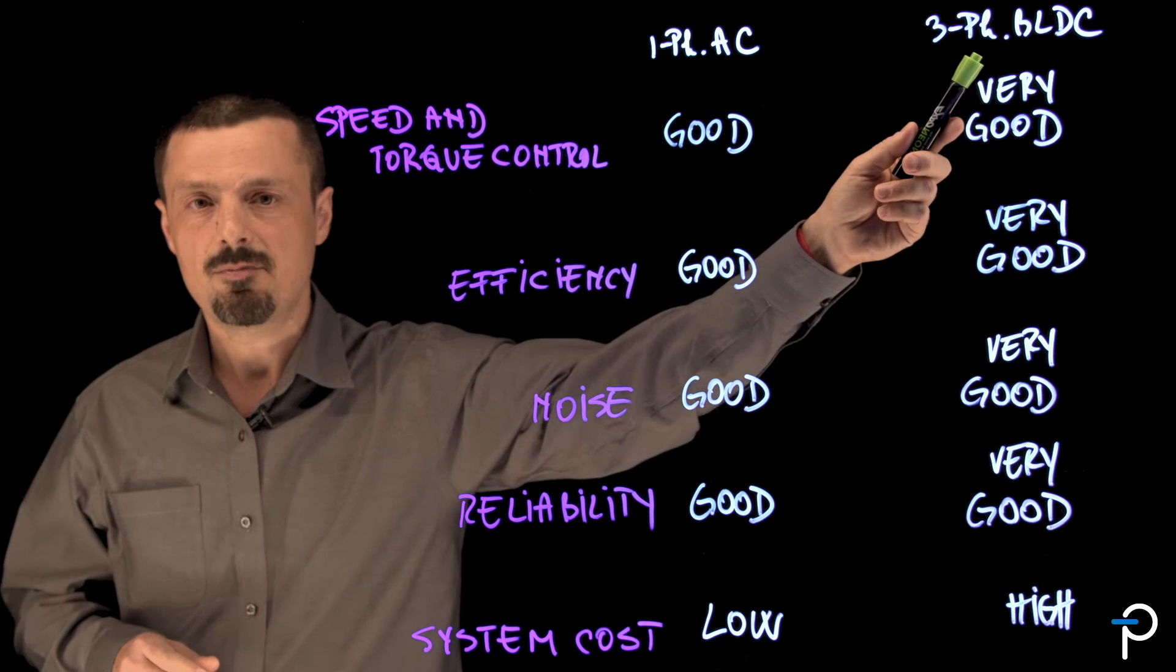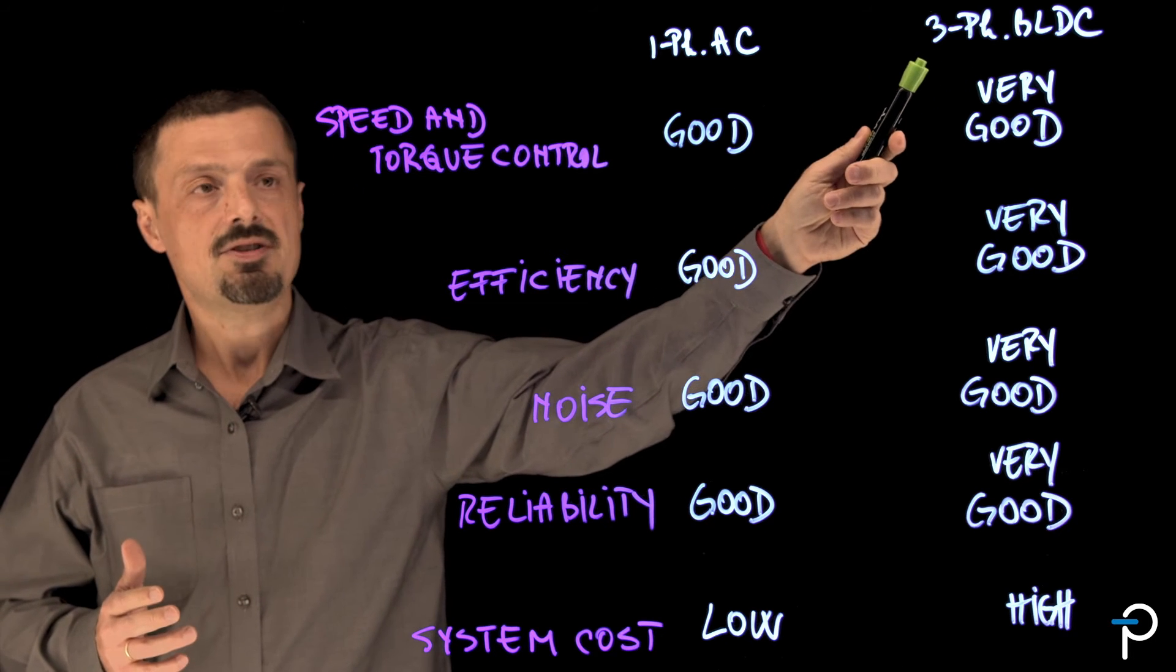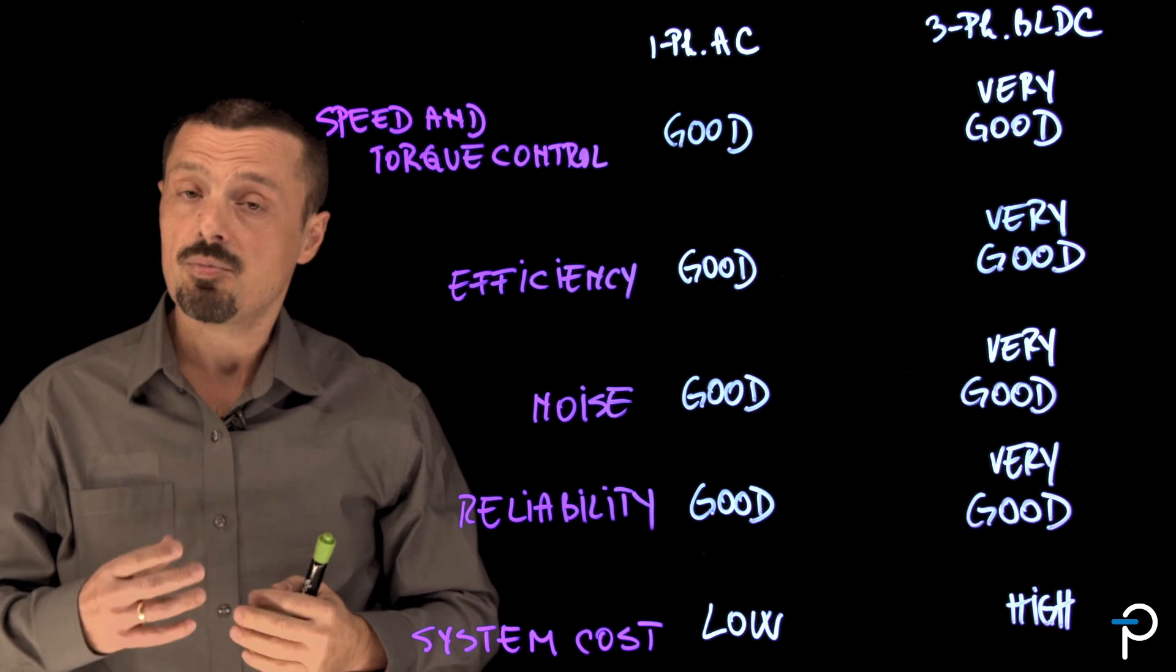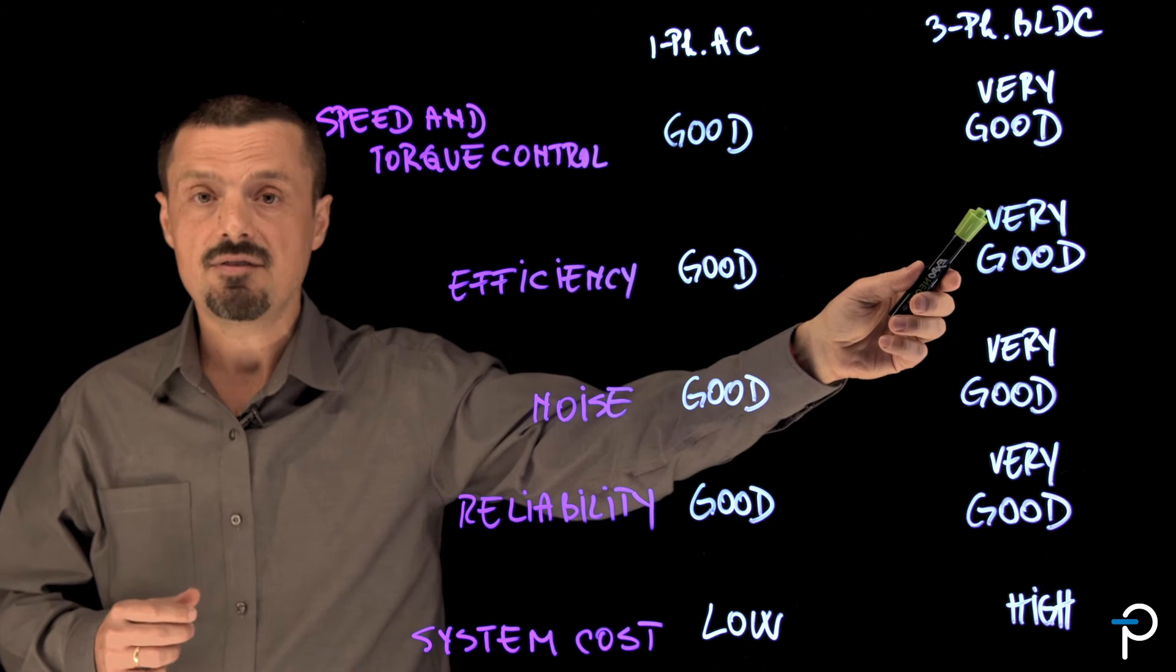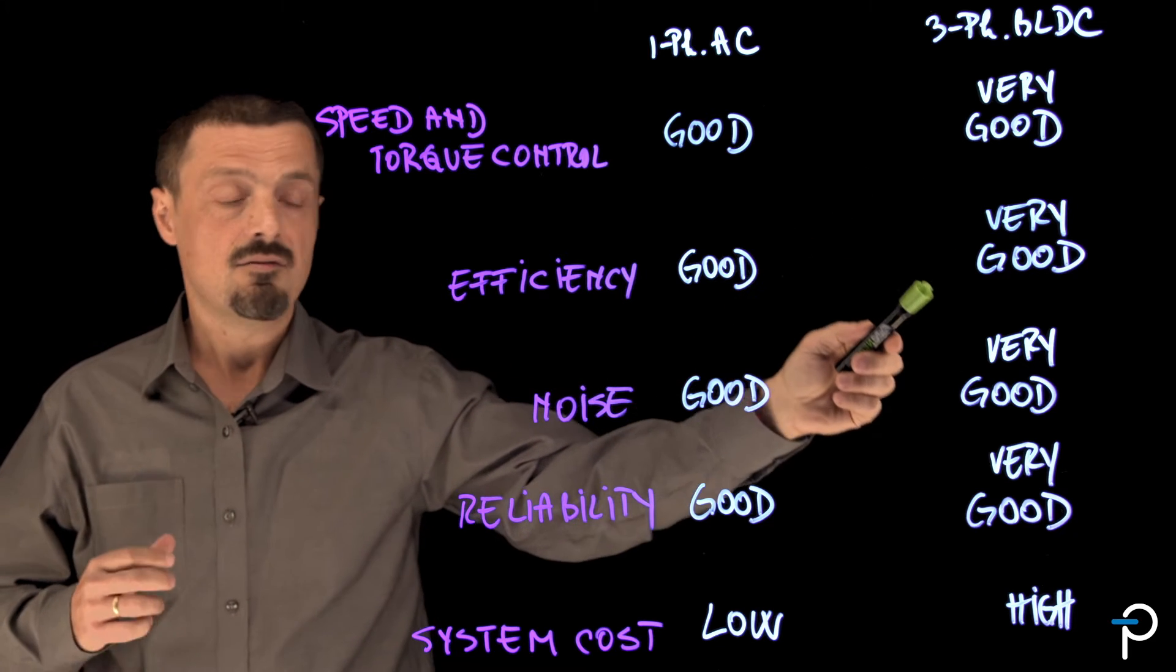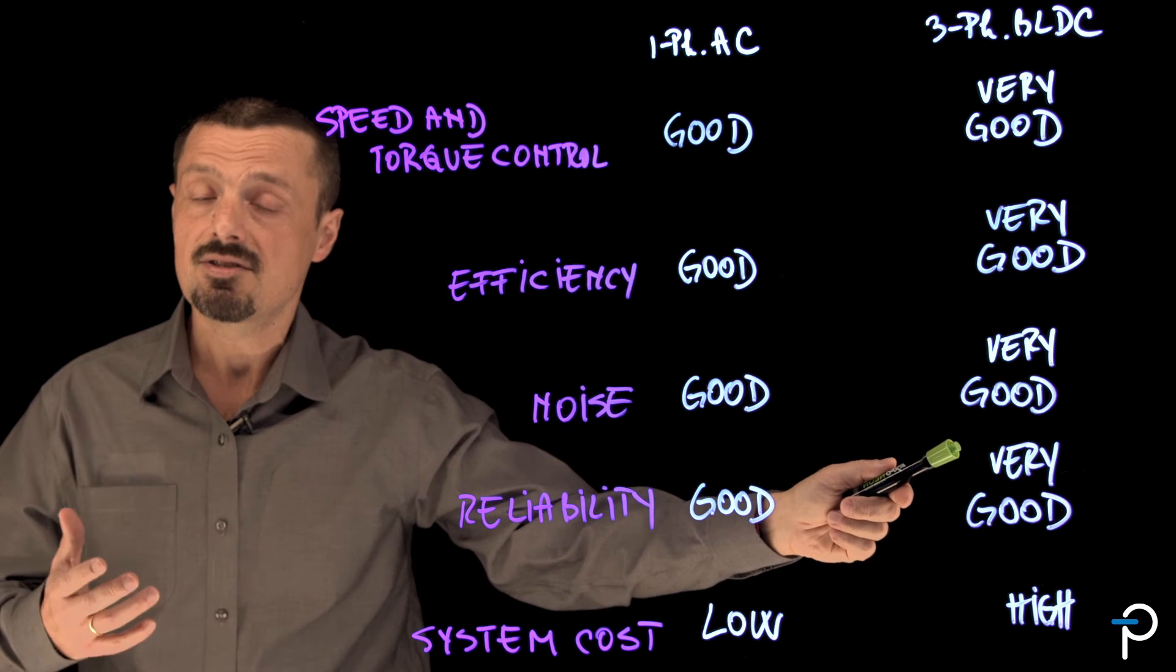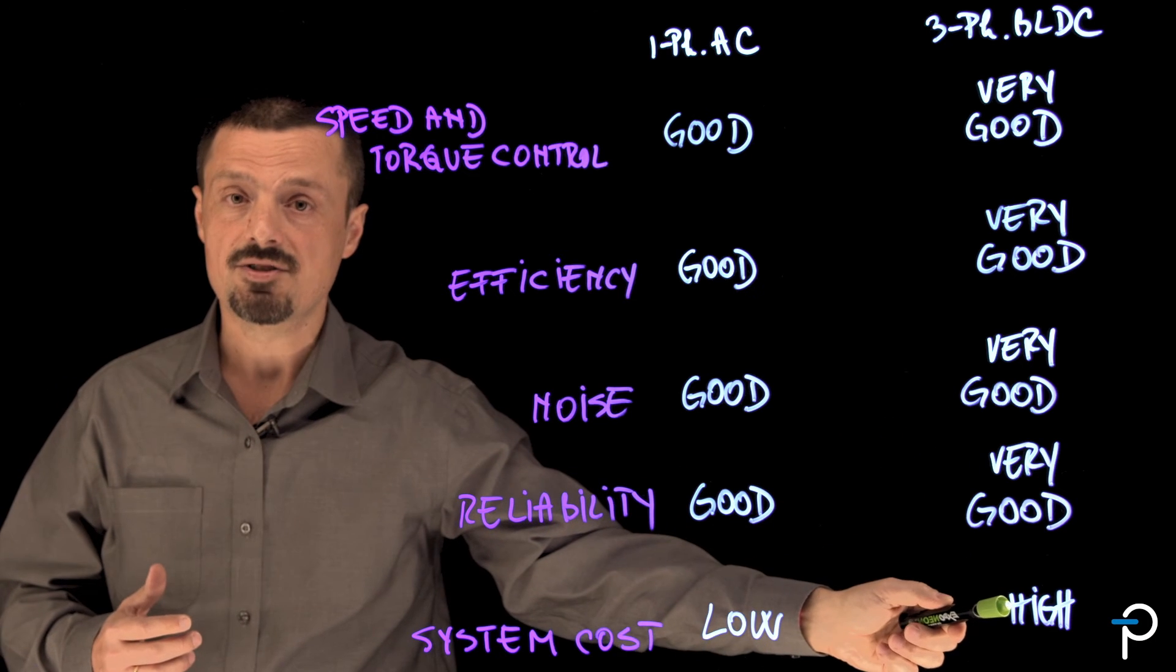Now let's look at the other end of the spectrum, three-phase BLDC. Three-phase BLDC has variable speed and more computing resources to offer torque control. It has very good efficiency, very good noise, and high reliability because it doesn't have brushes. But all of these come at the expense of higher cost.